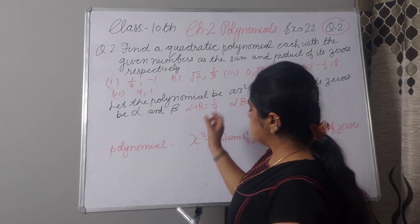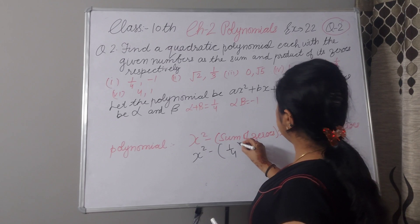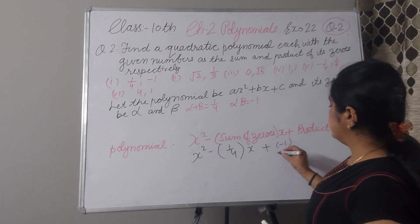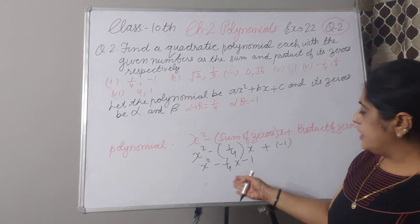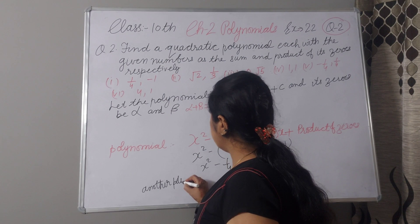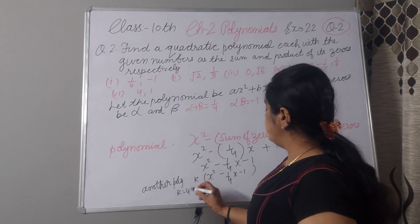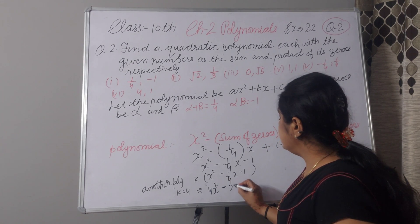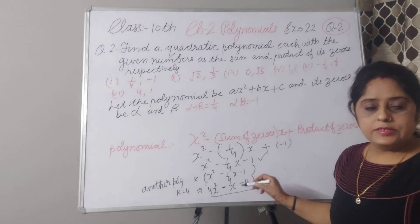Now we fill in the sum of zeroes as 1/4: x² minus 1/4 times x, and the product of zeroes is minus 1, so we write minus 1. The polynomial becomes x² minus 1/4x minus 1. You can also take the LCM and write another polynomial: k times (x² minus 1/4x minus 1). If k equals 4, the polynomial becomes 4x² minus x minus 4. Both forms are correct.